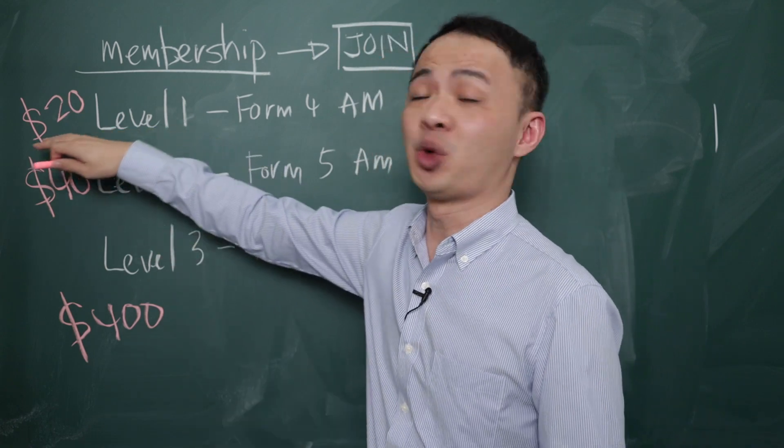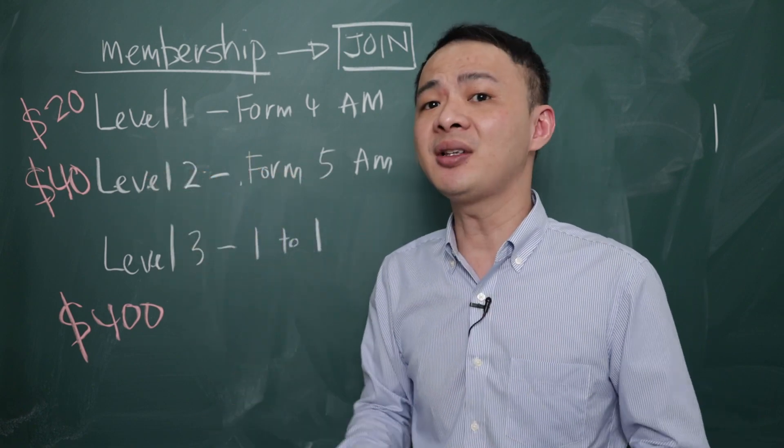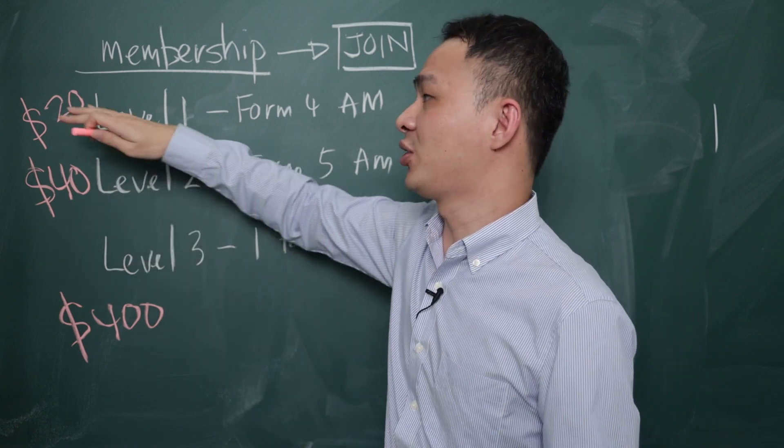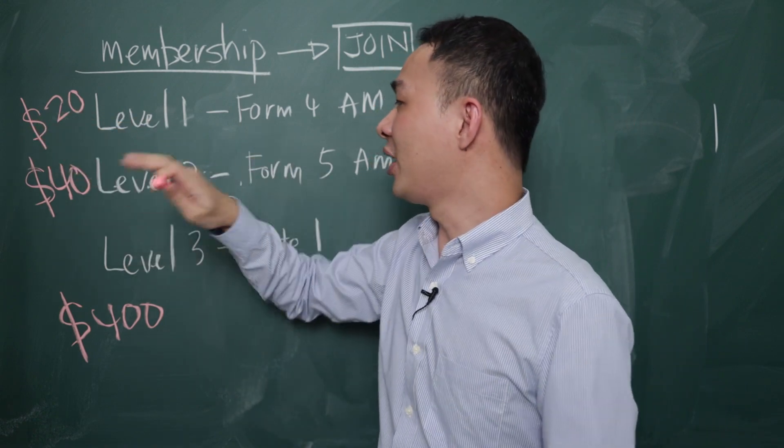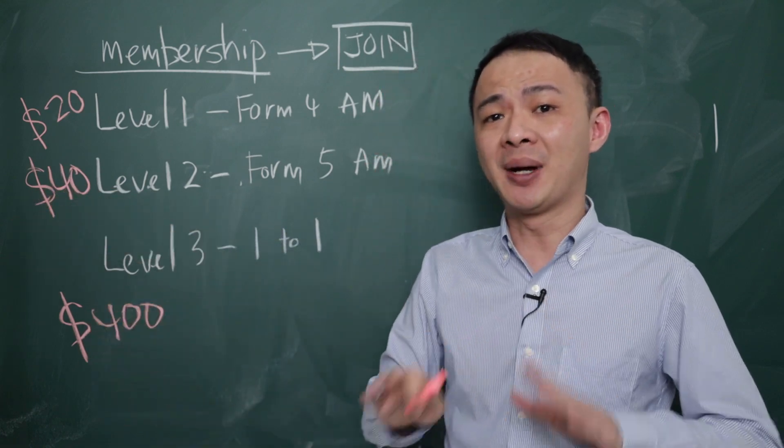The level 1 is about RM20 per month. I believe you need to insert your credit card information and then YouTube will charge you every month. So for level 1 it's RM20 per month, level 2 is RM40 per month, and level 3 is about RM400 per month.